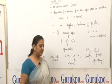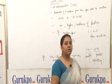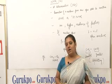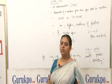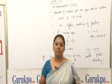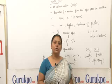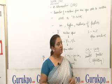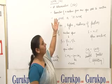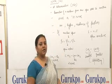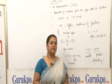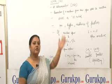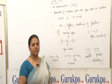Spectroscopy is of various types: IR spectroscopy, UV spectroscopy, and NMR spectroscopy. IR is infrared, UV is ultraviolet, and NMR is nuclear magnetic resonance spectroscopy. It was discovered in 1946, but only after 1960 was it being used for the structural determination of organic compounds.